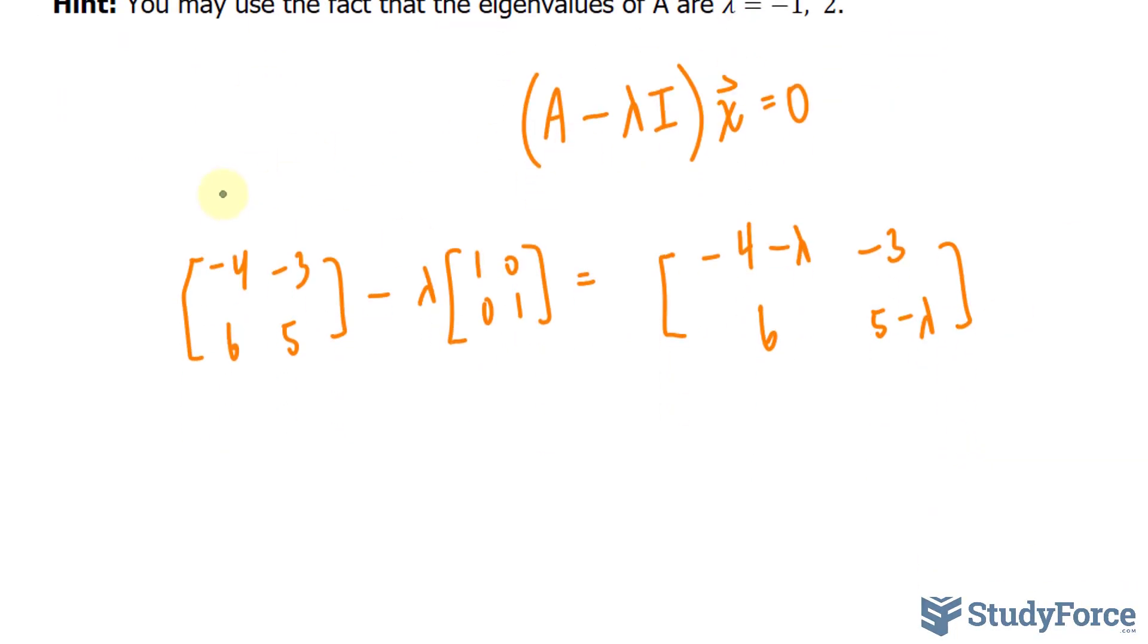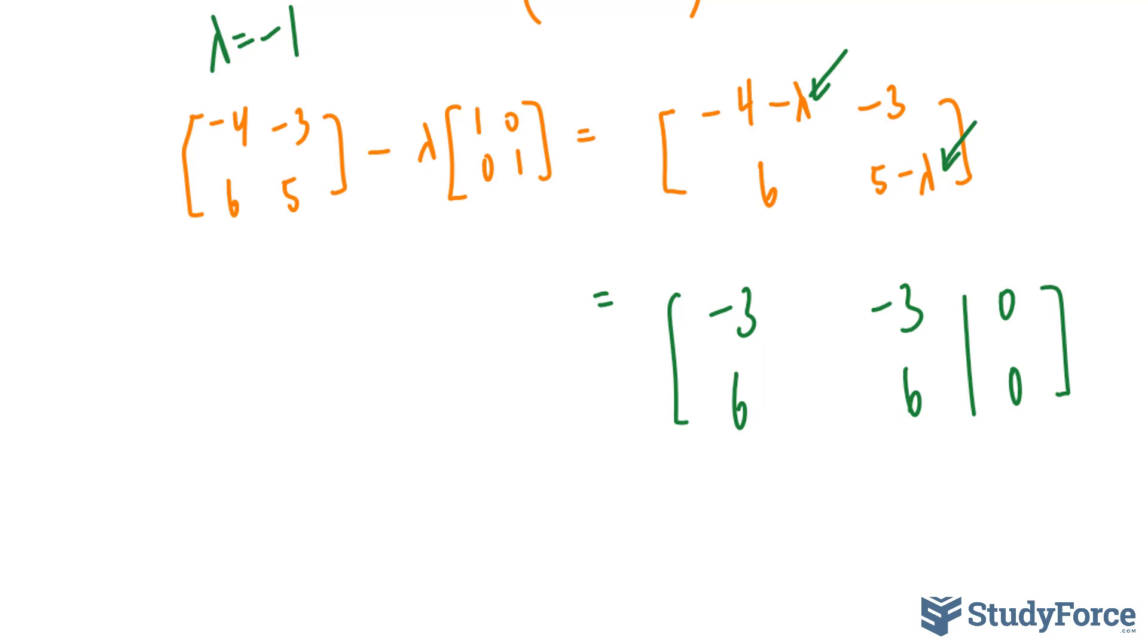For the eigenvalue of negative 1, I'll now substitute that value in here. If I do that correctly, I should end up with negative 3, negative 3, 6 and positive 6. Don't forget that we have zeros out here, so I'll just place them here. I will row reduce this matrix as much as possible. To do that, I'll multiply row 1 by 2 and add it to the bottom row, row 2. This will represent my brand new row 2.